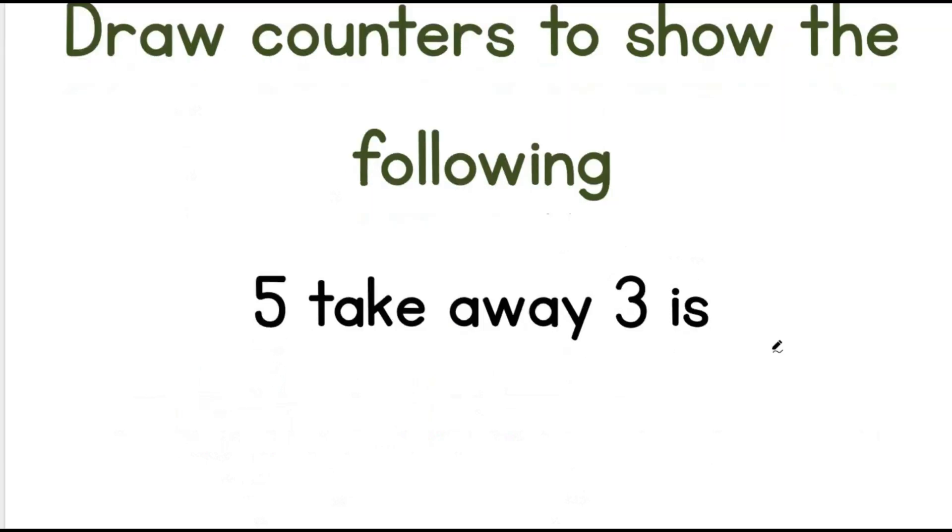5 take away 3 is... Let's go. 1, 2, 3, 4, 5. Now we take away 3: 1, 2, 3. How many are we left with? 1, 2. We are left with 2. That means 5 take away 3 is equal to 2.